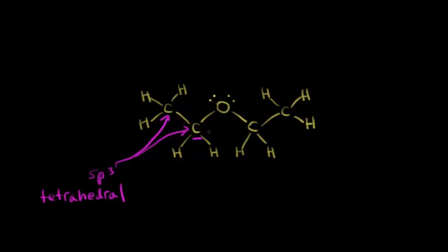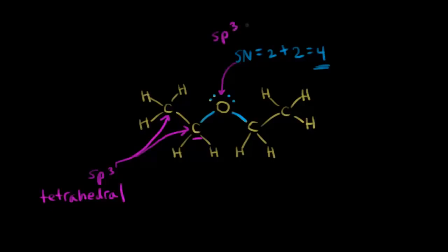Let's next look at the oxygen. To find the hybridization and geometry of this oxygen, steric number is useful. The steric number equals number of sigma bonds: here's one single bond (sigma bond) and here's another, giving two sigma bonds. Plus two lone pairs of electrons. Two plus two gives a steric number of four, so I need four hybridized orbitals. That occurs with sp3 hybridization, so this oxygen is sp3 hybridized with four sp3 hybrid orbitals.